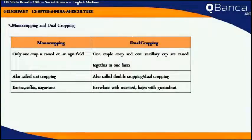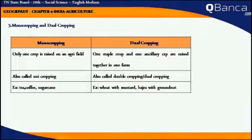Mono cropping and dual cropping. Mono cropping is a pattern in which only one crop is raised in an agricultural field. Dual cropping is a pattern in which one staple crop and one ancillary crop are raised together in the same agricultural field. Mono cropping is also called uni cropping, and dual cropping is also called double cropping. Examples of mono cropping: tea, coffee, and sugarcane.